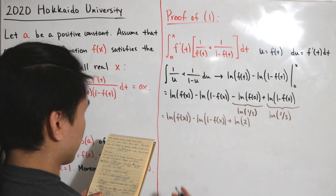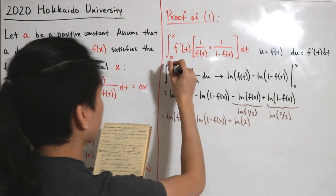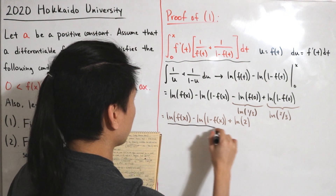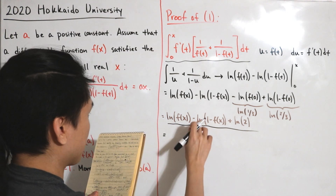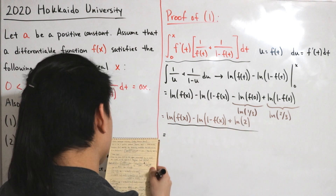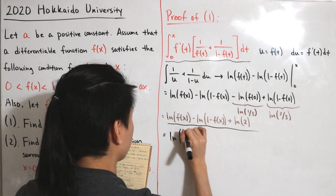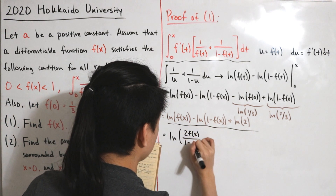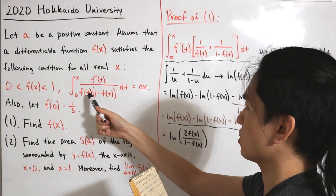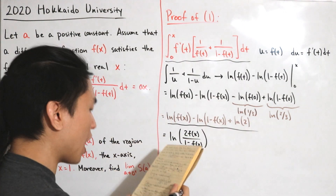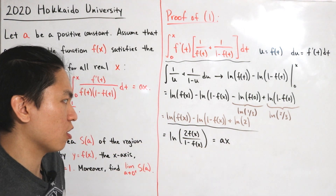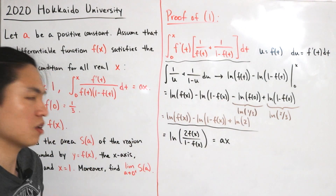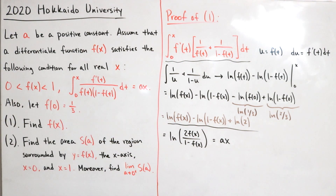Using logarithm properties — subtraction becomes division, addition becomes multiplication — the left-hand side becomes ln[2·f(x) / (1 - f(x))]. It's also given that the definite integral equals the linear function a·x, so we set that equality: ln[2·f(x) / (1 - f(x))] = a·x. Now we solve for f(x).